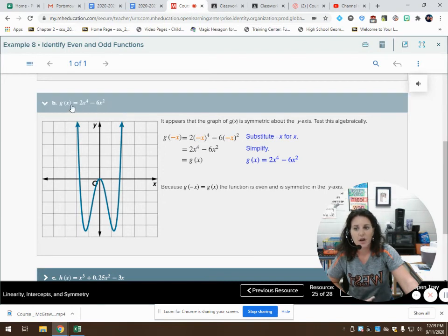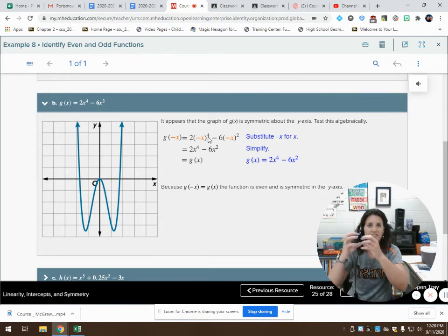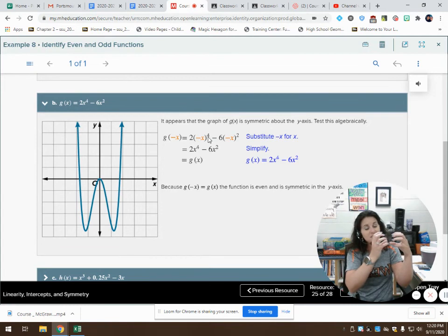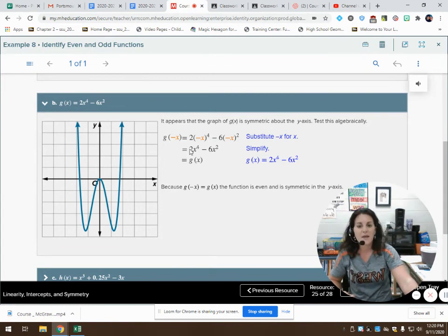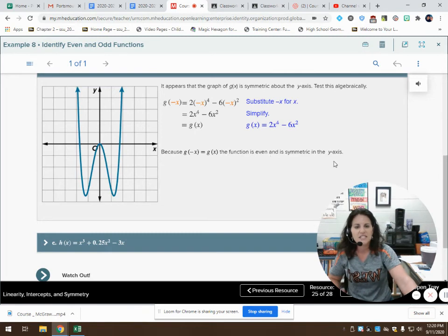To check to see if it's an even or an odd, I replace x with negative x. What happens if I have a negative number to an even power? It still comes out as an even, right? A negative times a negative is a positive, times a negative makes it a negative, times that other negative makes it a positive. So, I come out with a positive x to the fourth. Again, negative x squared becomes a positive. So, my function didn't change. When I plugged in a negative number, I still came out with the exact same equation. I plug in positive x, I get out the answer. I plug in negative x, I get out the same thing. Therefore, since the function g of negative x is equal to g of x, the function is even, and therefore, it is symmetric in the y-axis.